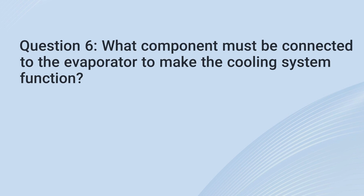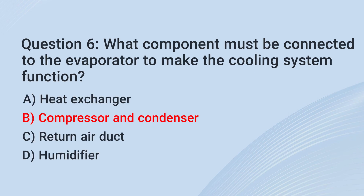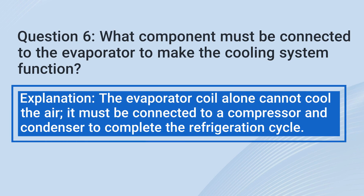Question 6: What component must be connected to the evaporator to make the cooling system function? a. Heat exchanger. b. Compressor and condenser. c. Return air duct. d. Humidifier. The correct answer is b: Compressor and condenser. Explanation: The evaporator coil alone cannot cool the air. It must be connected to a compressor and condenser to complete the refrigeration cycle.